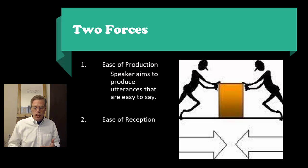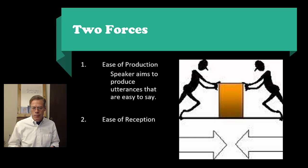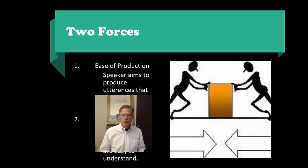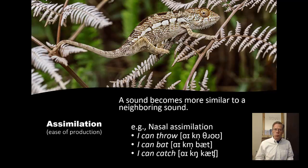From the ease of production side, the speaker aims to produce utterances that are easy to say. And from the ease of reception side, the speaker aims to produce utterances that are easy to understand. The first process we're going to look at is assimilation, which is an ease of production process.